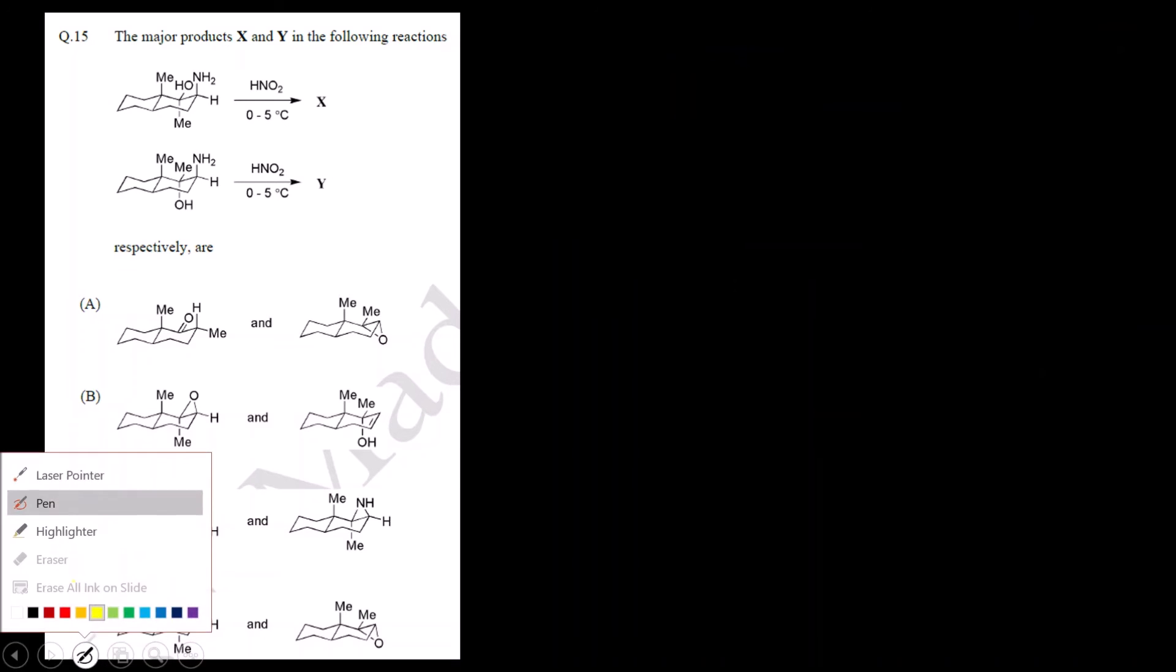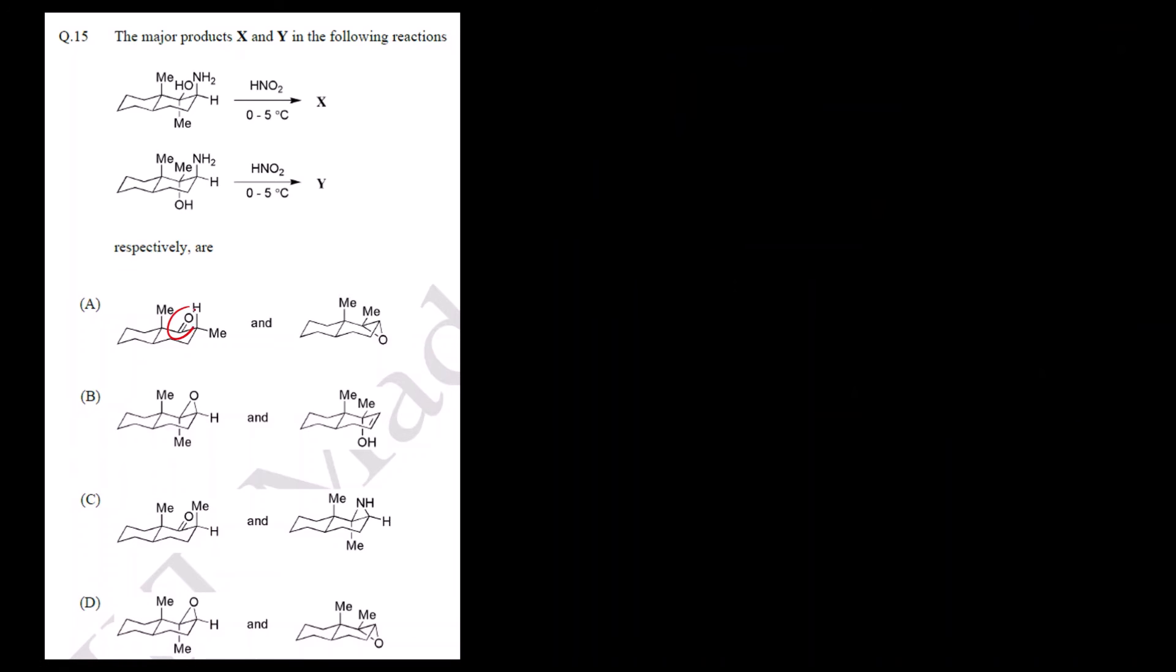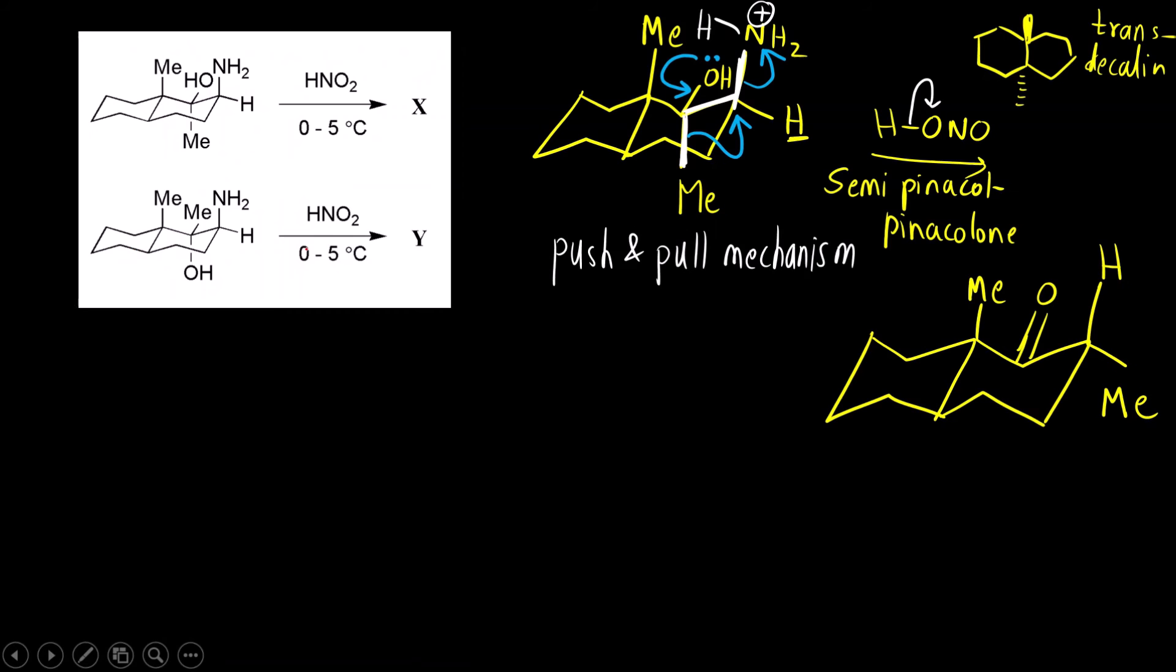You can see there is only one option where this is formed. This one. Stereochemistry methyl is below the plane. Here you can see it is changed. From only the first reaction itself you can mark the answer but we have to check the second reaction as well.